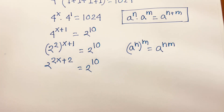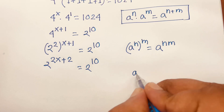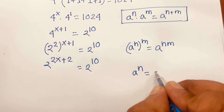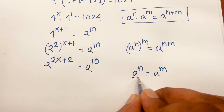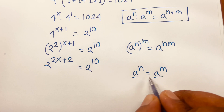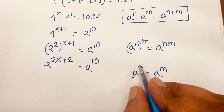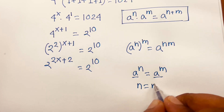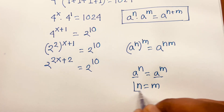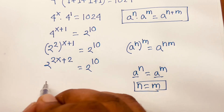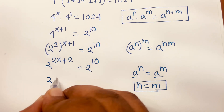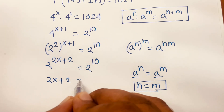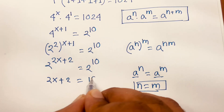Since the bases are the same, when a to the power n equals a to the power m, the exponents must be equal. So we get 2x plus 2 equals 10.